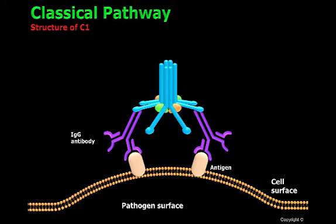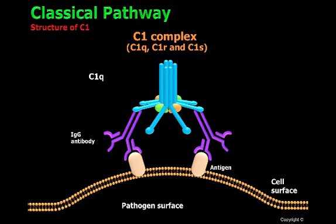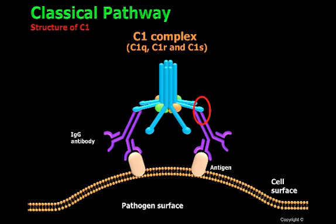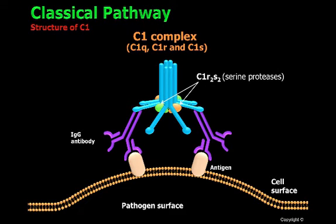C1 is an important protein that is unique to the classical pathway of the complement system. C1 is formed by three proteins: C1Q, C1R, and C1S. C1Q, shown in blue, has two main regions: the collagenous tails that maintain the characteristic structure of C1Q, and the globular heads that are able to recognize the Fc regions of antibodies. C1Q can bind to different classes of immunoglobulins, but binds with stronger affinity to IgM and IgG3. The C1 complex has two molecules of C1R and two molecules of C1S bound to C1Q — these are serine proteases that are essential in the activation of the classical pathway.